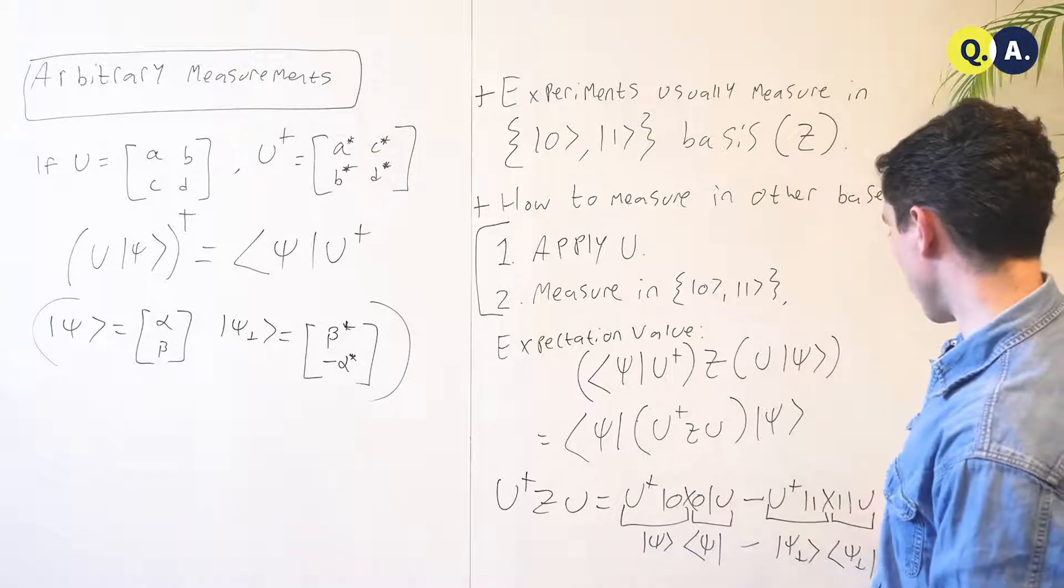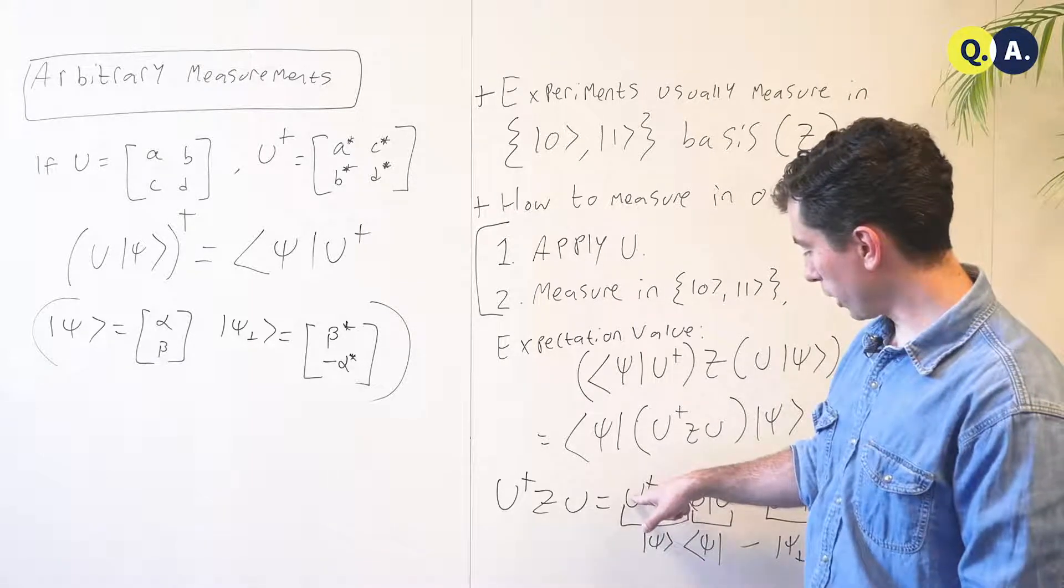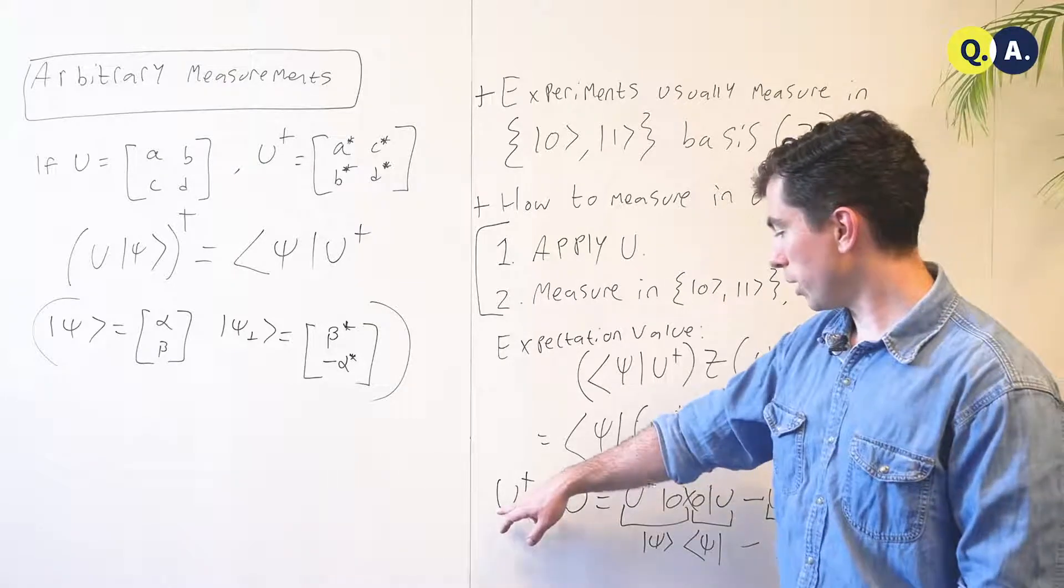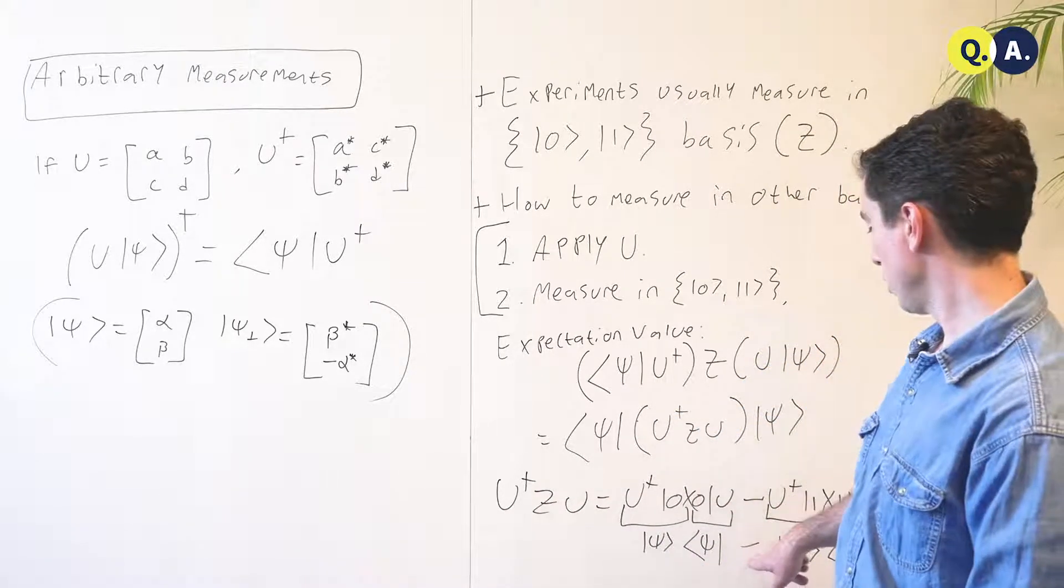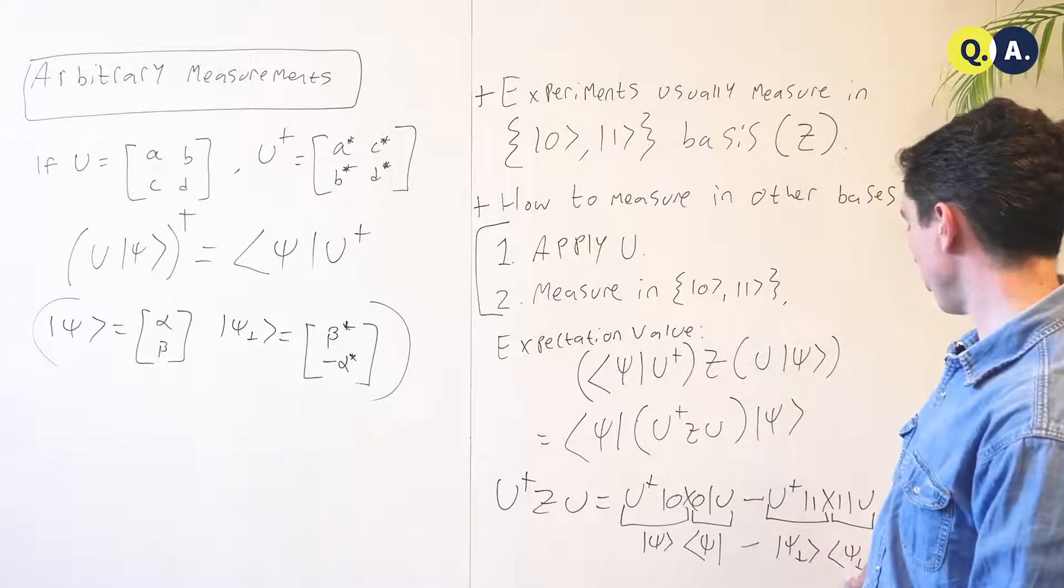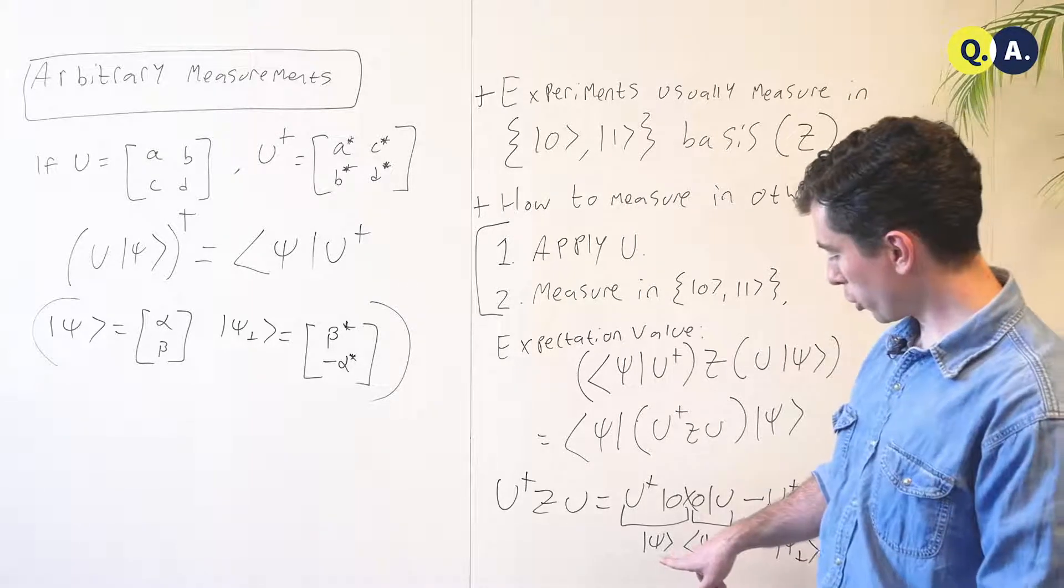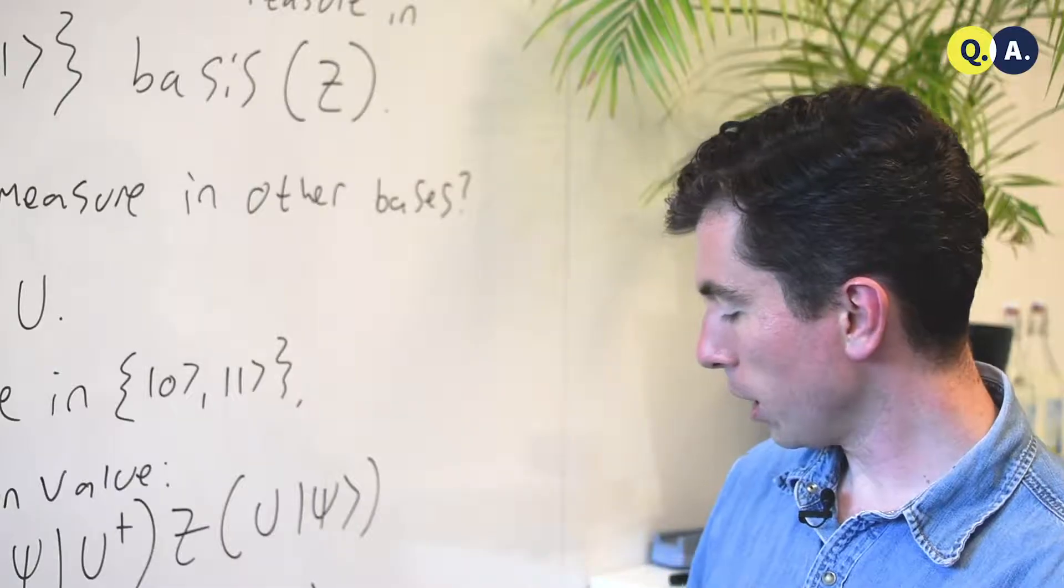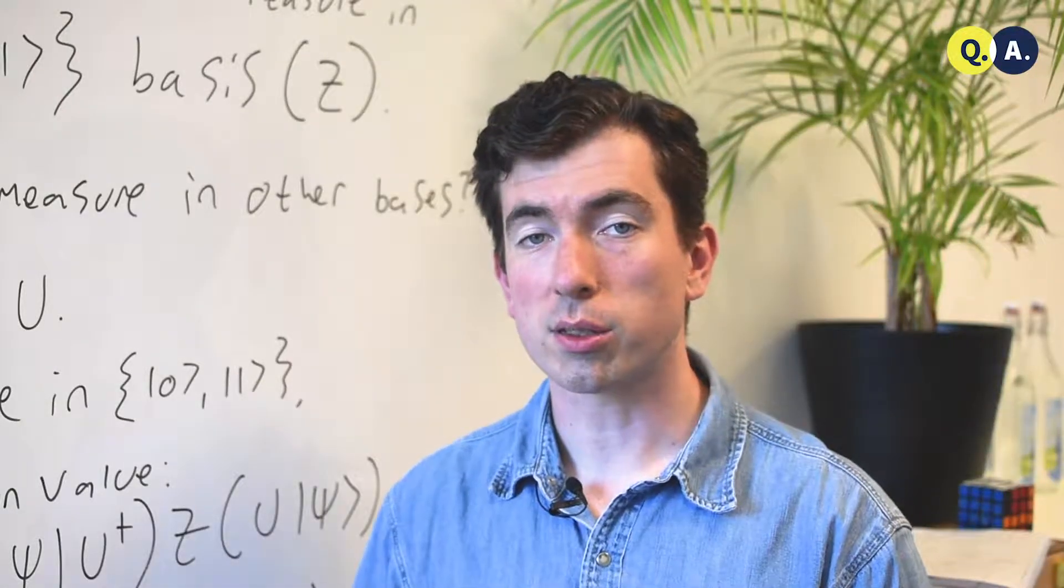Now, u dagger z u, we can write out like so, and if we label the state u dagger zero as psi, then u dagger z u is equal to psi psi minus psi perp psi perp. This is a measurement that will return 1 if the state is psi and minus 1 if the state is psi perp, giving us an arbitrary basis to measure in.